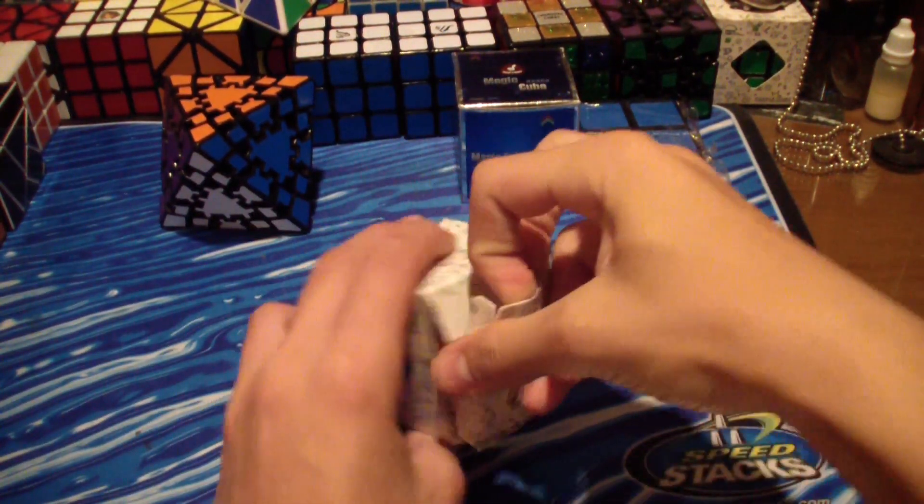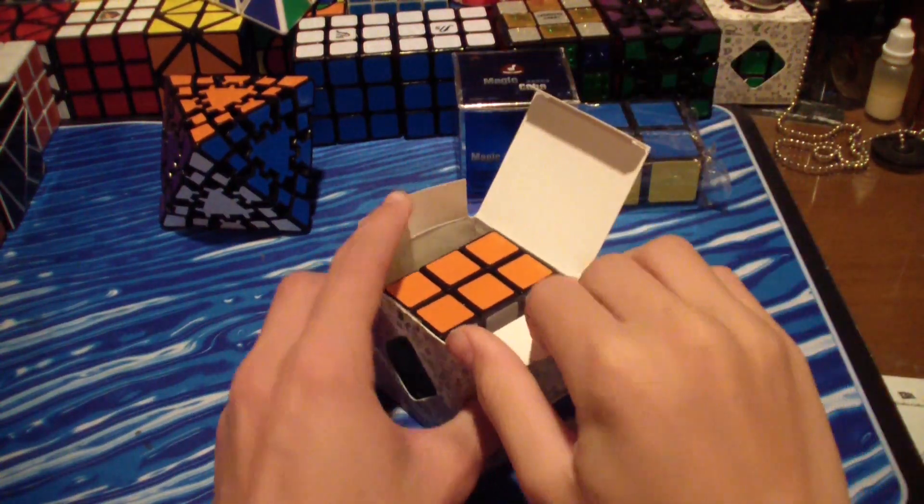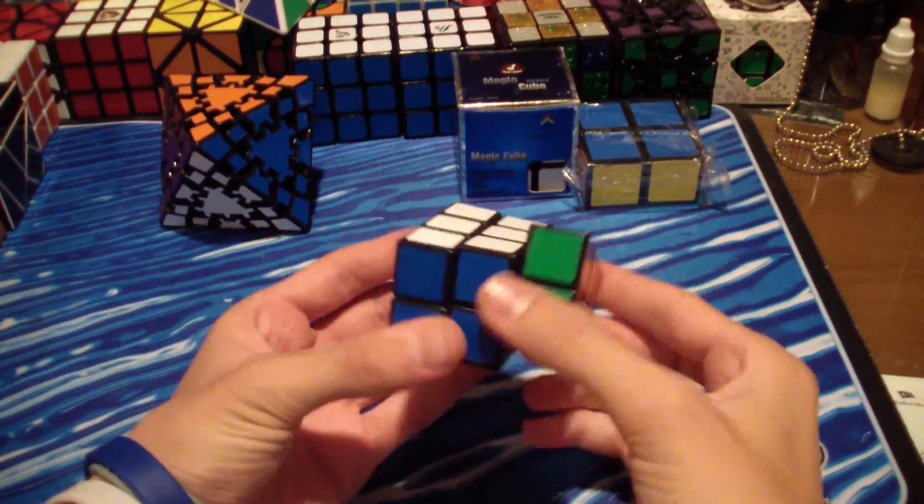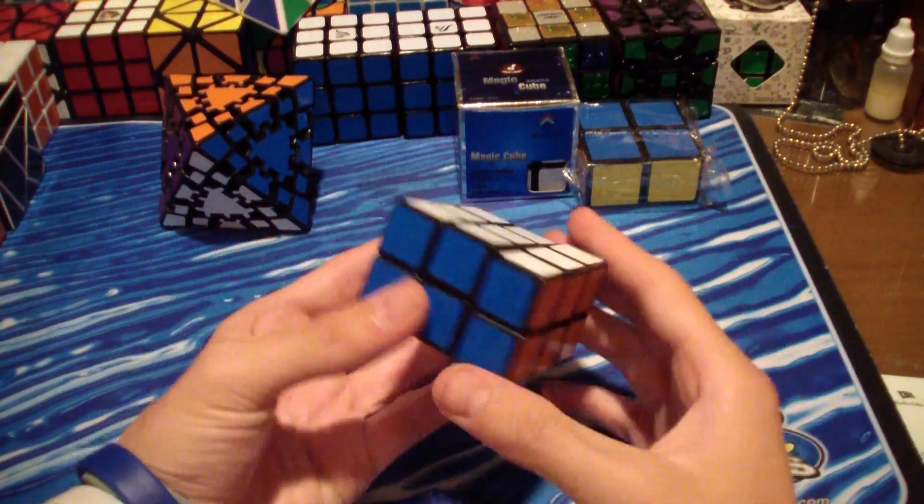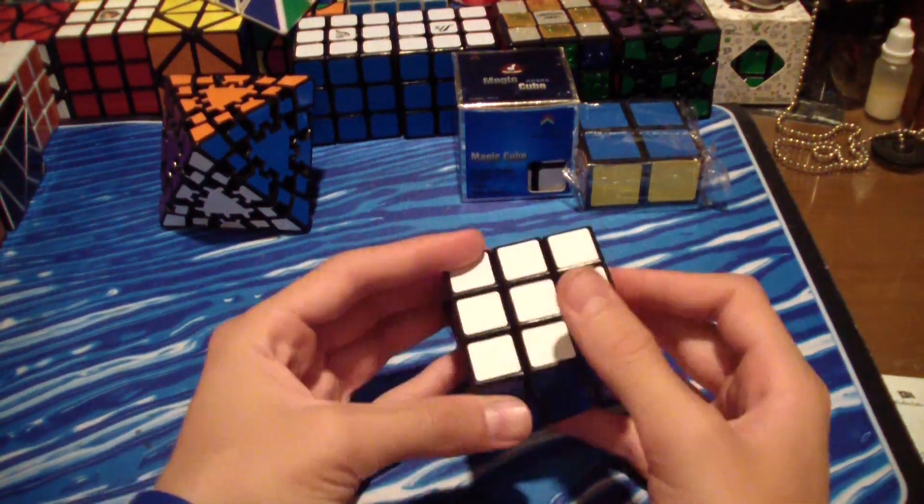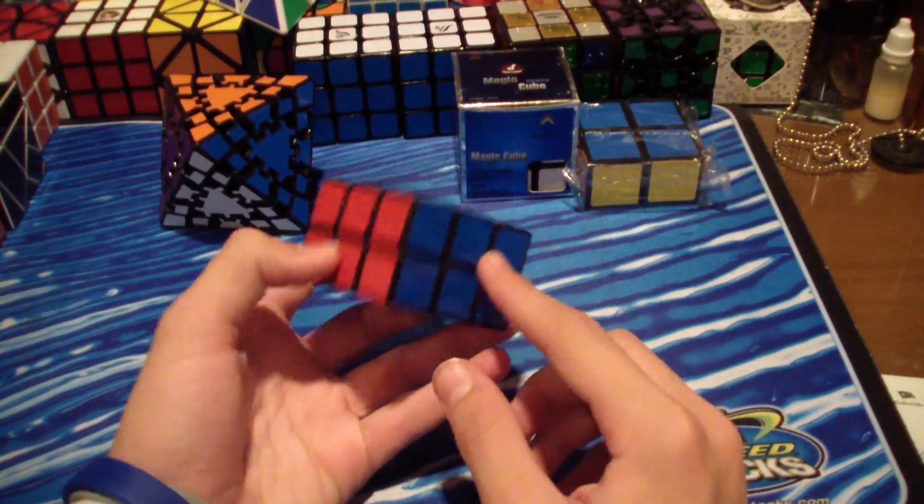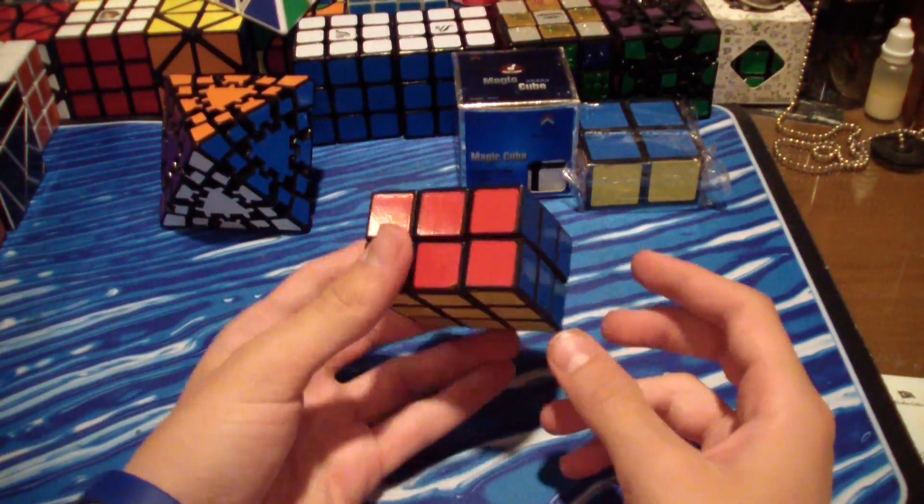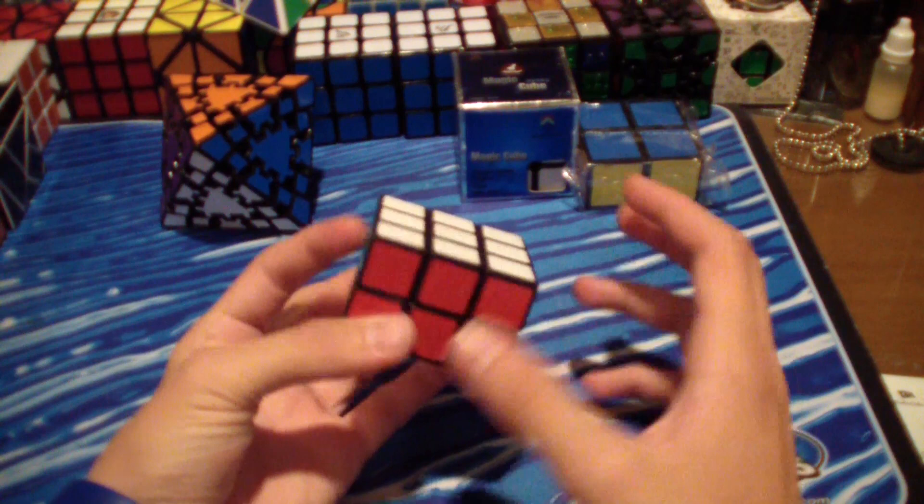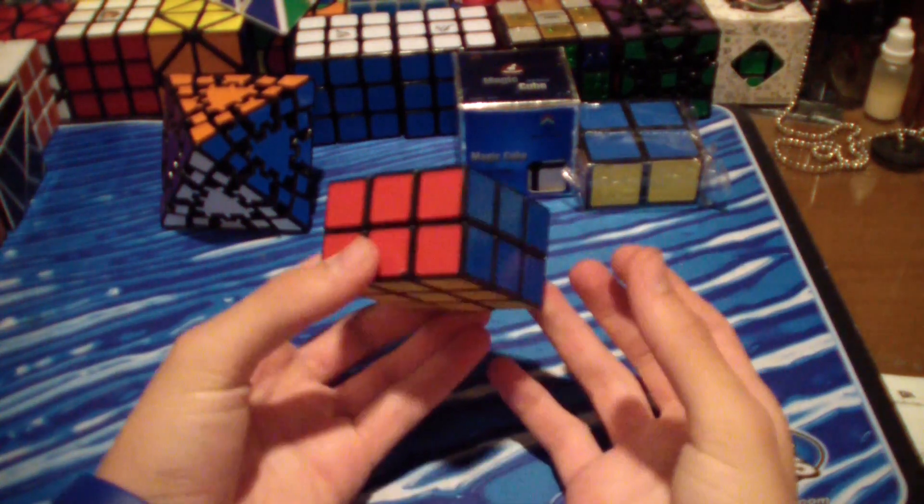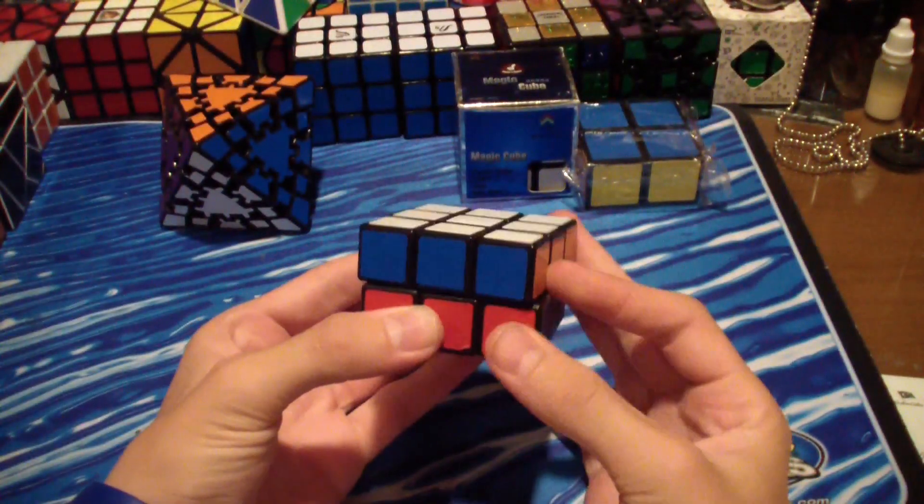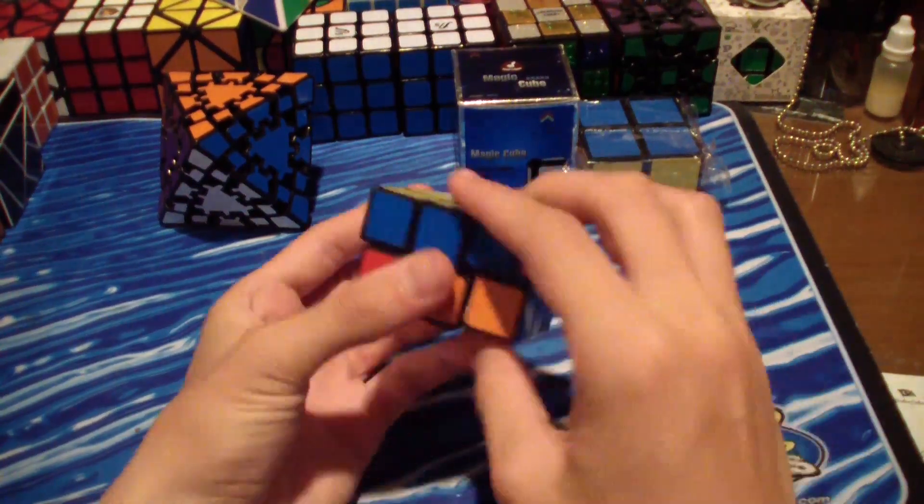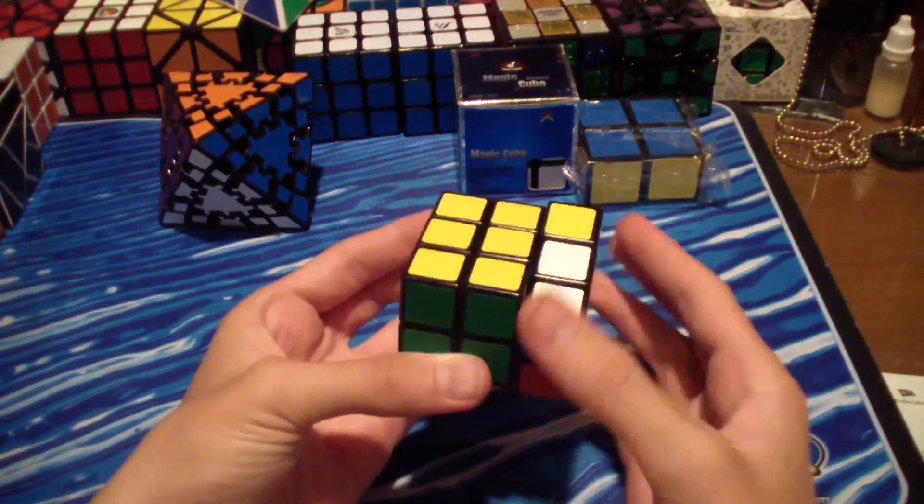Now let's get into the Lan Lan 3x3x2. First turns on this puzzle—it's pretty smooth, a lot smoother than the Moyu 3x3x2 right out of the box. The color scheme is a little different: yellow and white on top. It's actually the correct color scheme with white and yellow being the main colors, unlike the Moyu which has blue and green on top and bottom. It does not have textured stickers like the Moyu does.